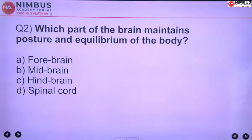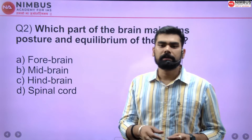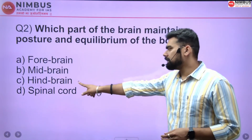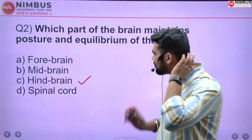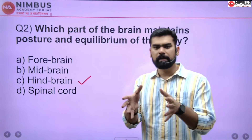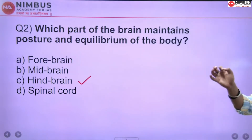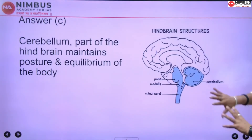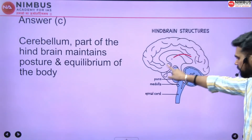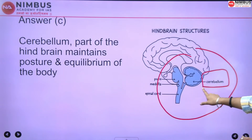Which part of the brain maintains posture and equilibrium of the body? The right answer is C — hindbrain, which is the back part of your brain. In this area, there is a small part of the hindbrain called the cerebellum. The cerebellum helps us maintain posture and equilibrium, so the right answer is C.